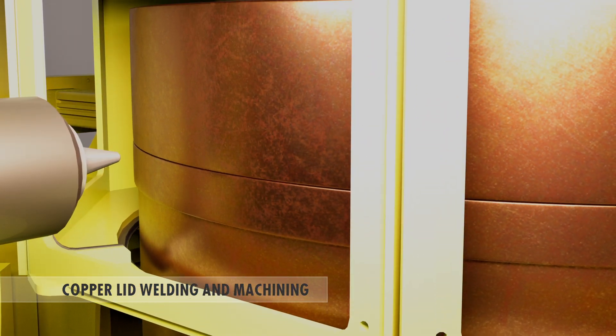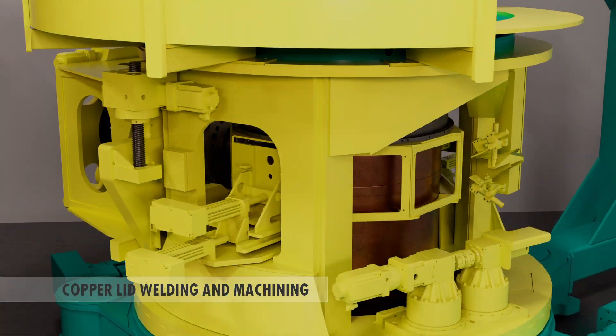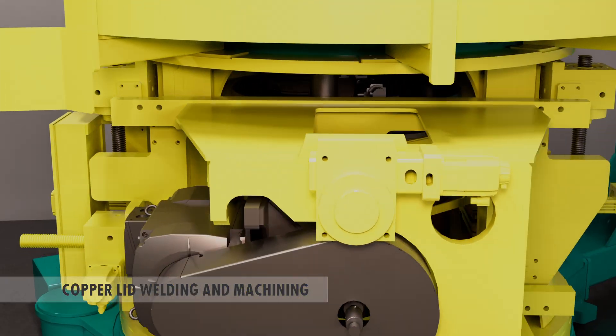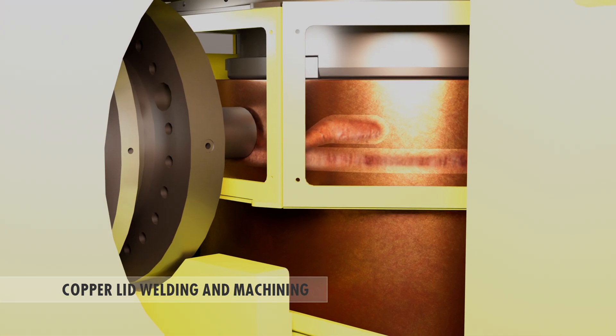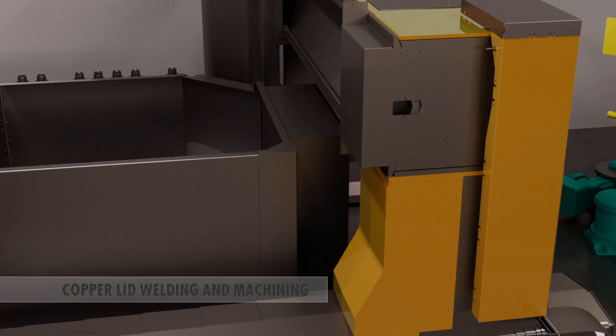After welding, the canister is returned to the machining station, where the upper end of the canister is machined. Machining removes excess copper from the canister lid and machines the weld seam area to allow inspection of the weld by eddy current and ultrasound testing, in addition to visual inspection.